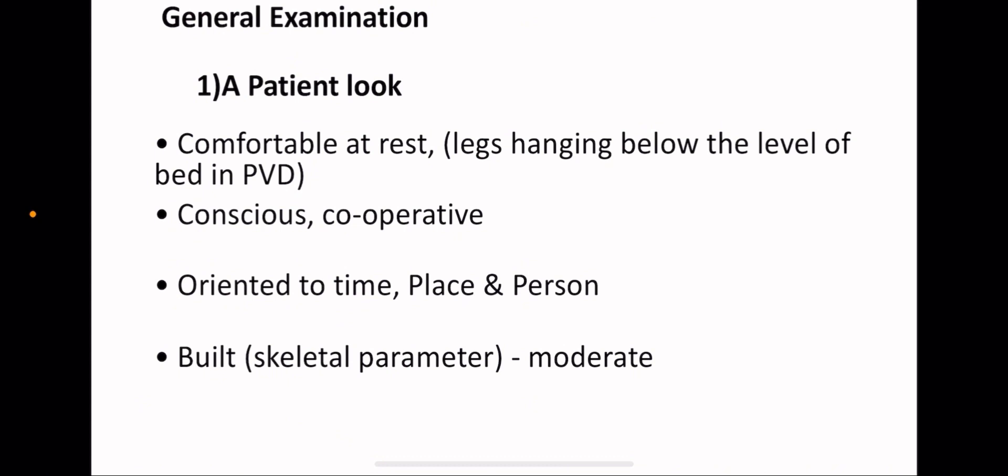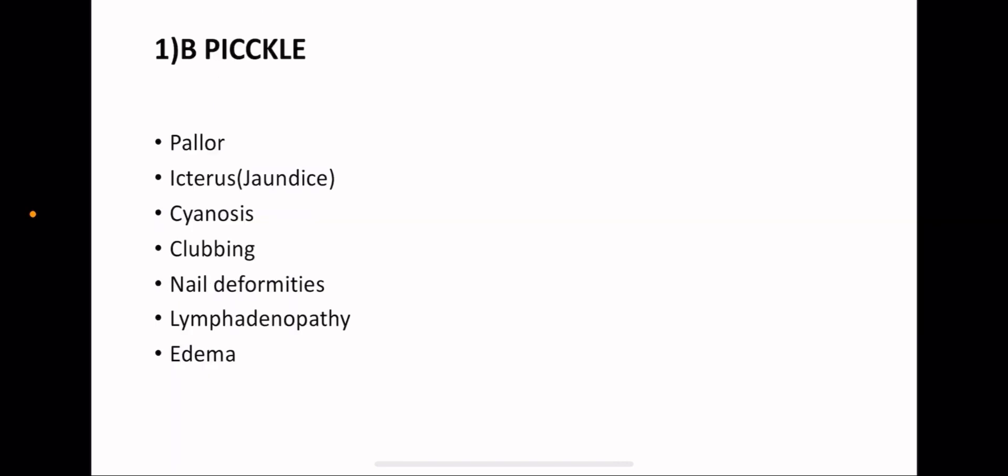Firstly, we're going to start with the general examination. I divided it into A and B. For A, it's just the general look of the patient. Check if your patient is comfortable at rest or the legs are hanging below the level of the bed. Usually, most patients that hang their legs below the level of the bed have peripheral vascular disease, and they do that to increase the blood flow to the lower legs. Check if your patient is conscious and cooperative, oriented to time, place and person or not, and the build of the patient.